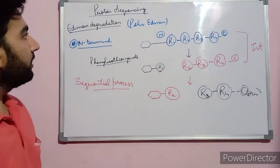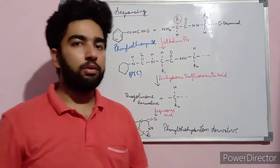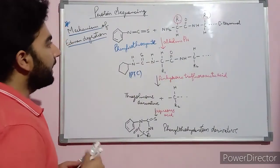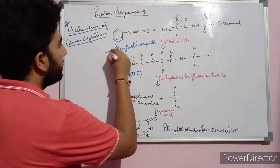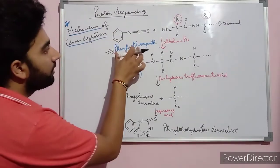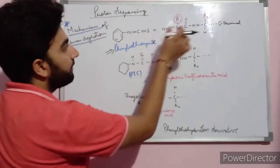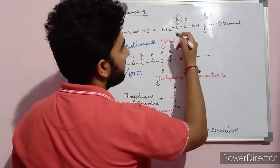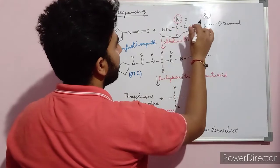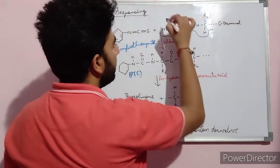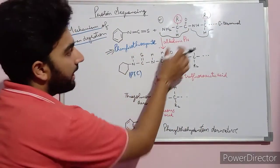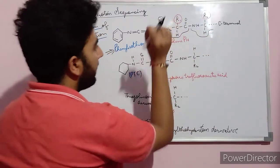Now I will discuss about the mechanism of the Edman degradation. What happens in the reaction process? This phenyl isothiocyanate is the chemical reagent that is involved in this reaction. It reacts with the polypeptide sequence. This is the polypeptide sequence in which this is the first amino acid, this is the second, and so on — this is the N-terminal and this is the C-terminal.